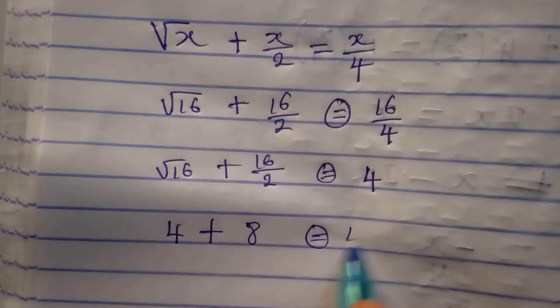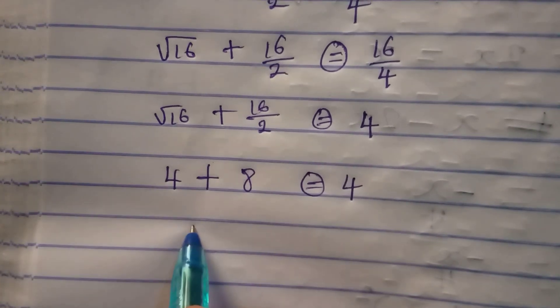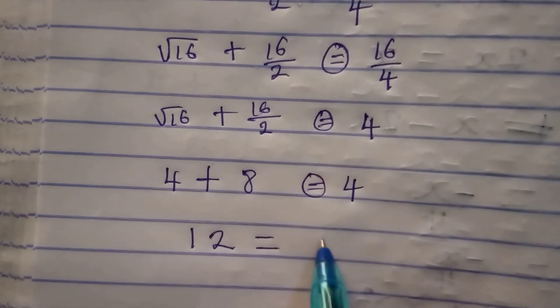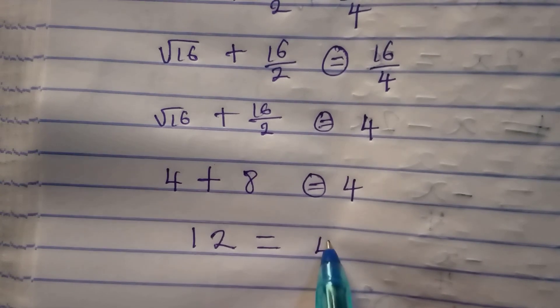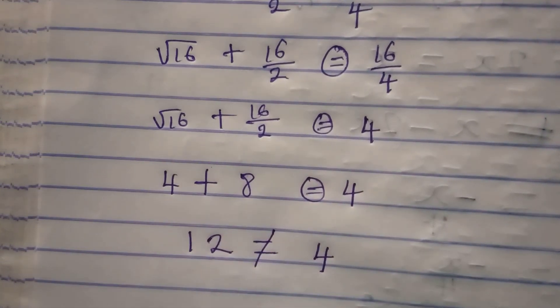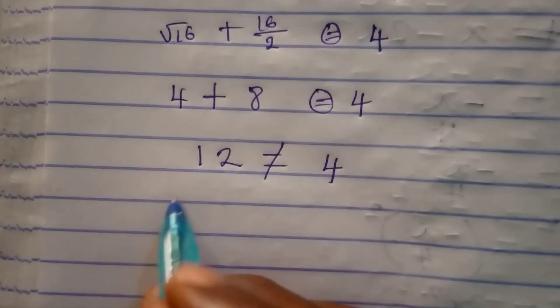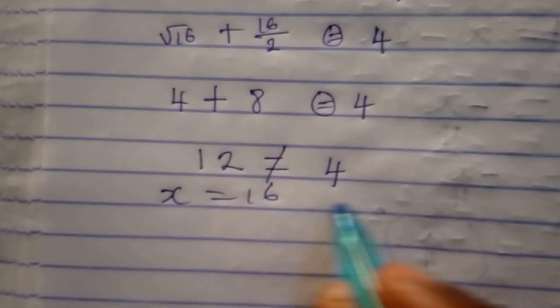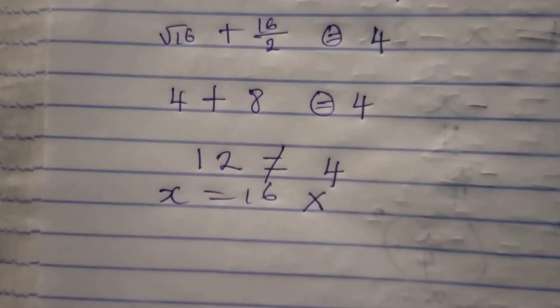Does this give us 4? The answer is no because we are having 12 to be equal to 4 and this cannot be correct. So 12 cannot be equal to 4. Therefore we can conclude that x equals 16 does not satisfy the equation.